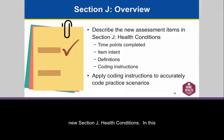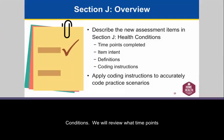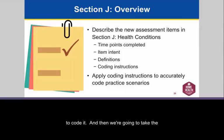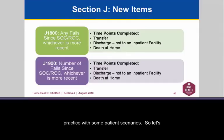Now it's time to take a look at the new Section J Health Conditions. In this section, we are going to describe the new assessment item in Section J, review the time points at which we will complete this element, what the intent behind it is, how it's defined, and how to code it. Then we're going to practice with some patient scenarios. J1800 — any falls since start of care or resumption of care, whichever is more recent — is completed at the time of a transfer OASIS, a discharge not to an inpatient facility, or a death at home.